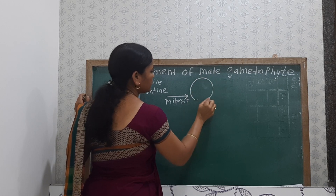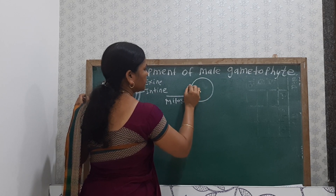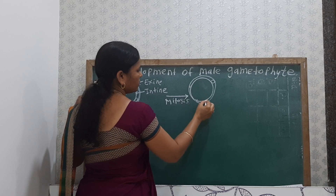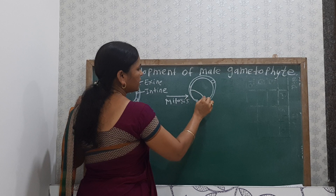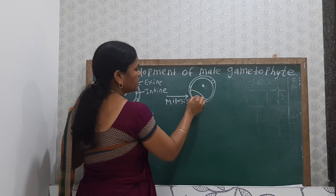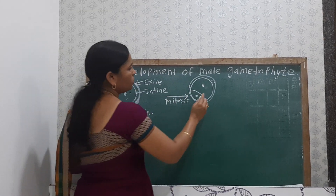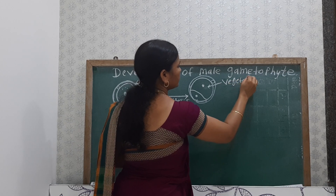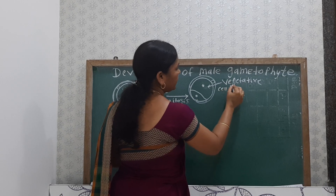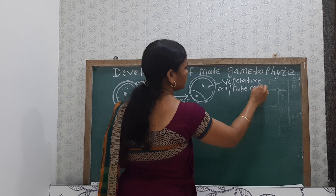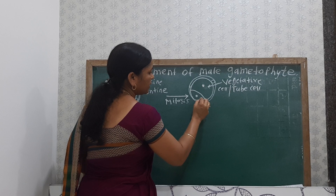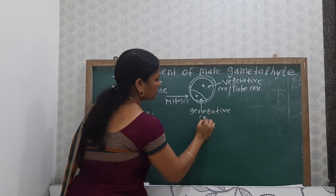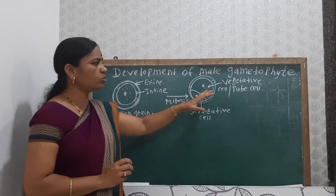Here in the pollen grain we can see the exine, intine, and there are also germ pores. The two-celled structure is produced: one is the larger cell and another is the smaller cell. The larger cell is known as the vegetative cell, or it is also known as tube cell. While the smaller cell is known as the generative cell. This is the two-celled structure of the pollen grain.